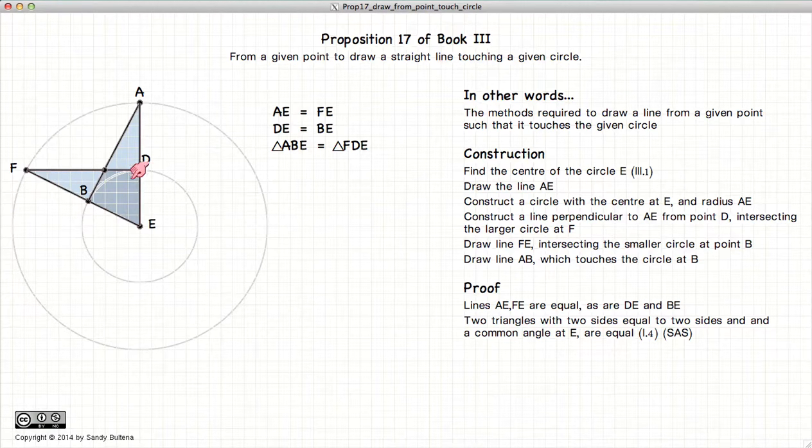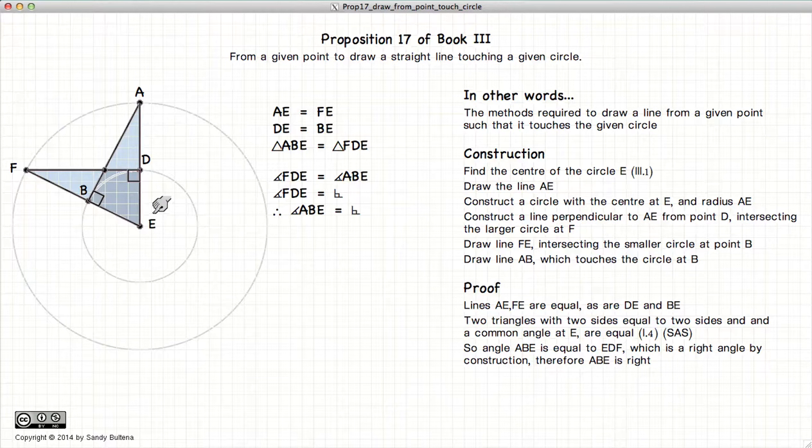Now FDE is a right angle because that's the way we constructed it. So if FDE is a right angle, then EBA is a right angle. So here we have EBA is a right angle.